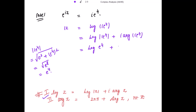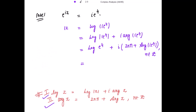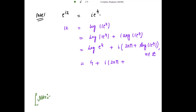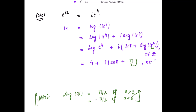So this equals e to the power 4 plus iota times the general argument. Using the result that argument of z equals 2n pi plus principal argument of z, we get iota z equals log of e to the power 4 plus iota times 2n pi plus principal argument of iota e to the power 4, where n belongs to the integers. Log of e to the power 4 is 4. The principal argument of a times iota equals pi by 2 if a is positive, and negative pi by 2 if a is negative. Since e to the power 4 is positive, the principal argument is pi by 2.